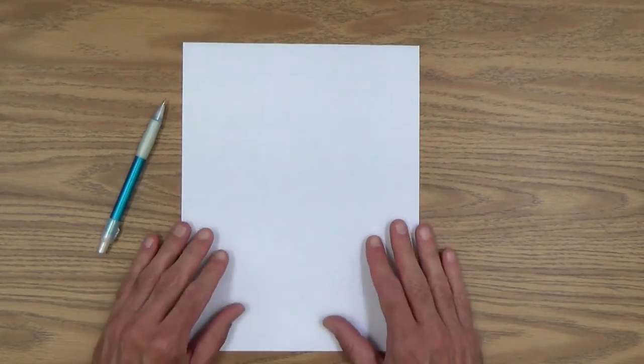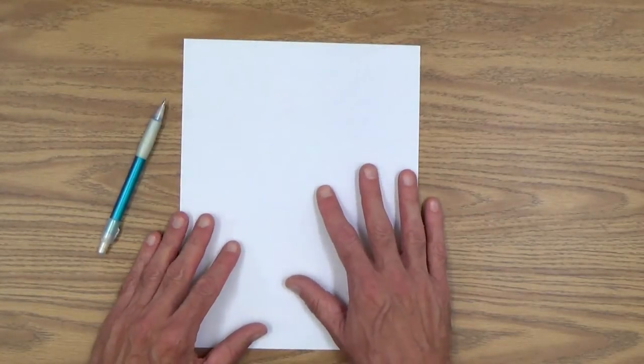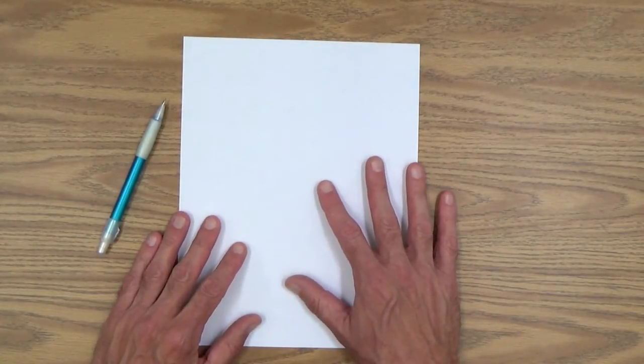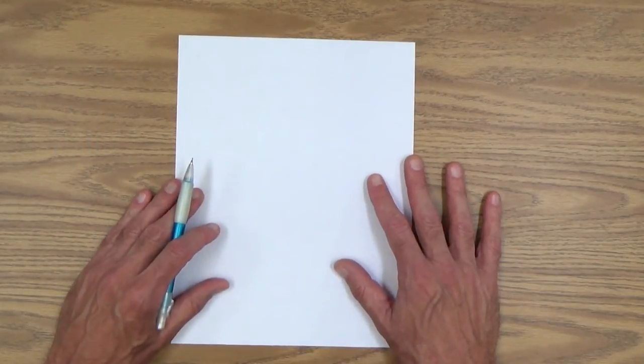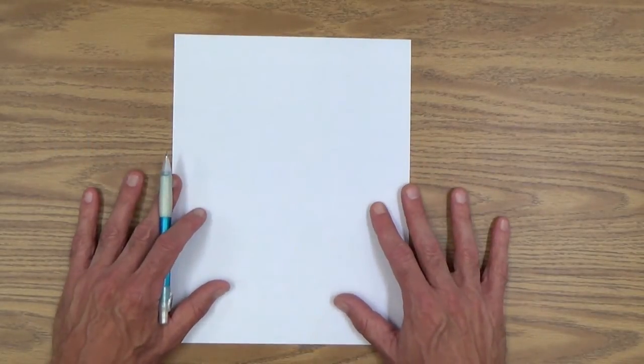And all you'll need to do this lesson is simply some blank paper and a pencil and or your whiteboard. So, two-digit subtraction.